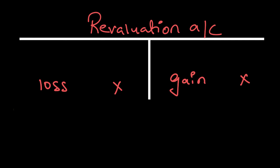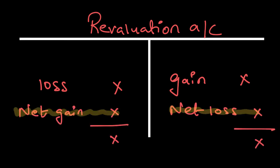After that, we need to calculate the net gain or loss. If there is a net gain, the balancing figure will come on the debit side because the gain side is heavier. If the loss side is heavier, the net loss will come on the credit side as the balancing figure. The purpose of drawing this revaluation account is to reward or penalize existing partners for any change in the value of assets. In the next video, I will solve a question involving revaluation of assets and liabilities, and show how to transfer this gain or loss to the partners' capital account.